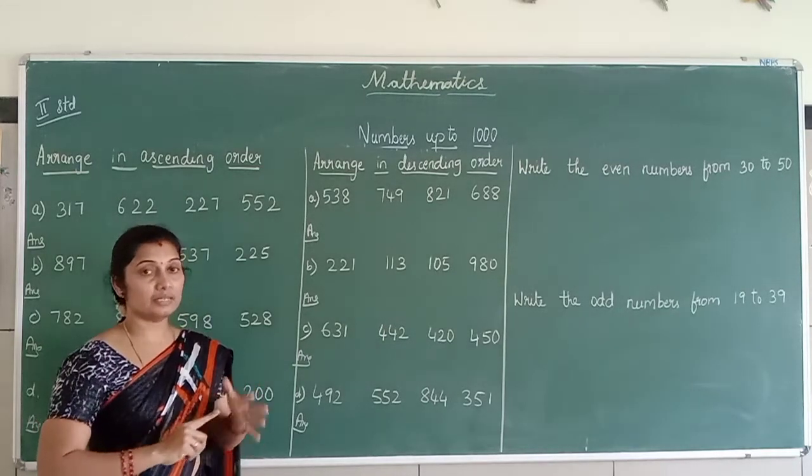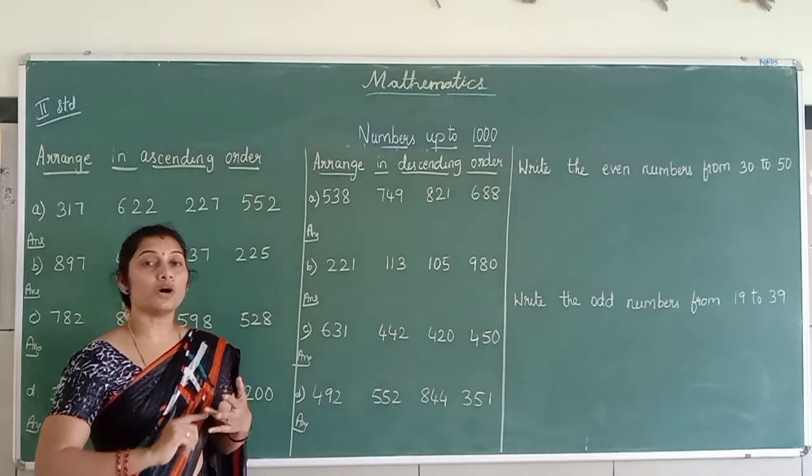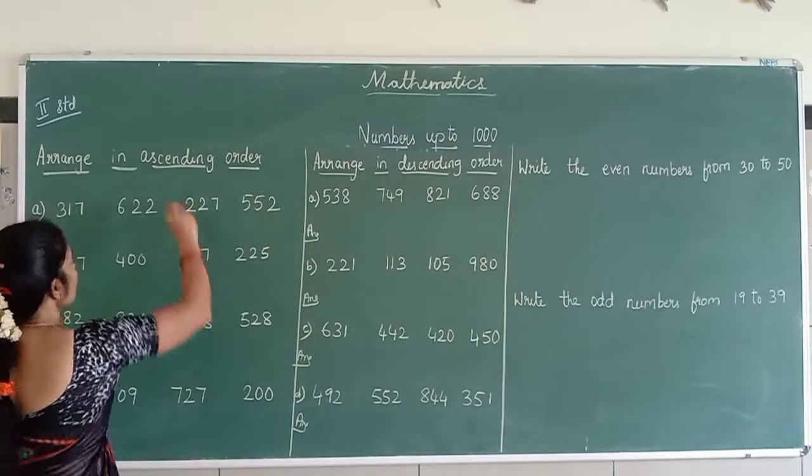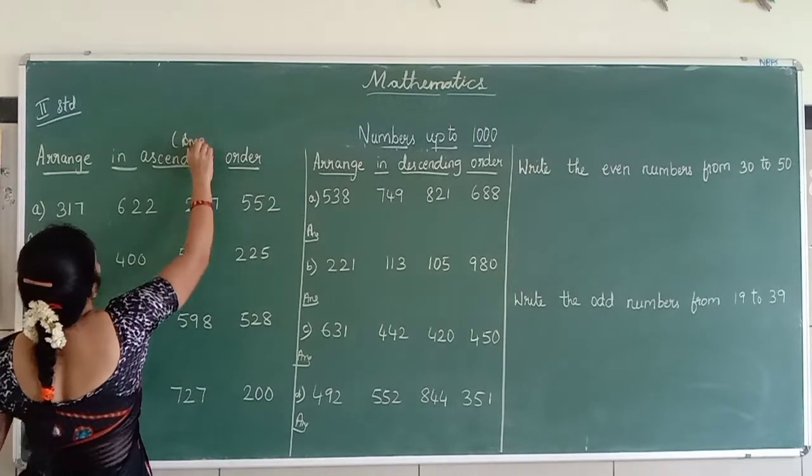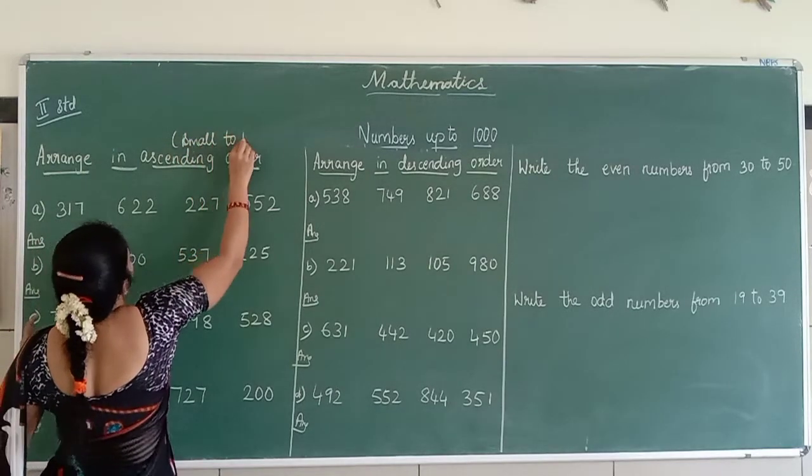1, 2, 3, 4, 5. That is what, you are going from small to big. So your ascending order will always be small to big. Okay, this you have to remember.